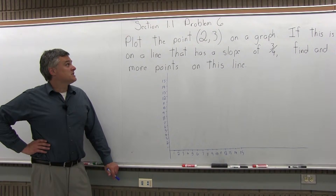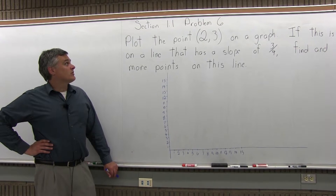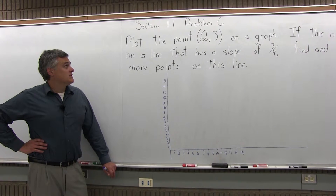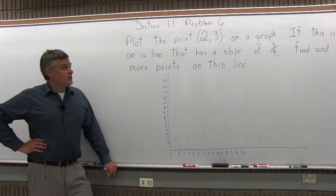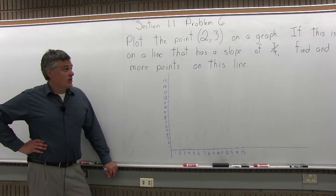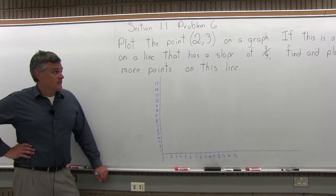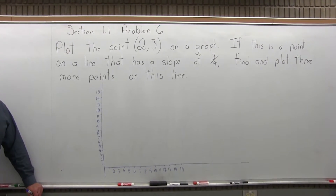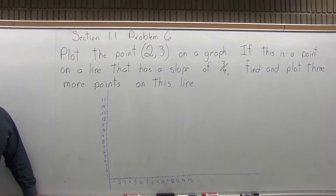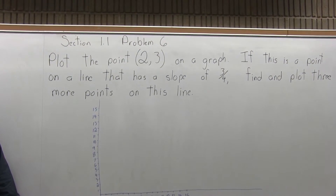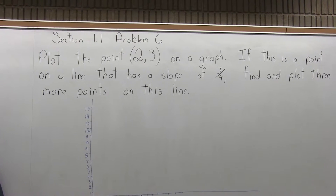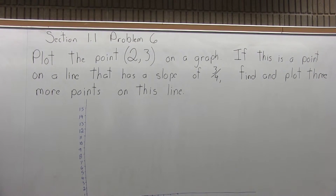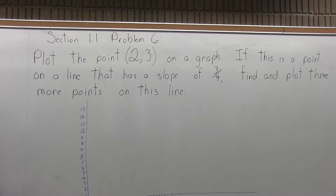This is Problem 6 of the homework from Section 1.1. It says: plot the point (2, 3) on a graph. If this is a point on a line that has a slope of 3 fourths, find and plot three more points on this line.